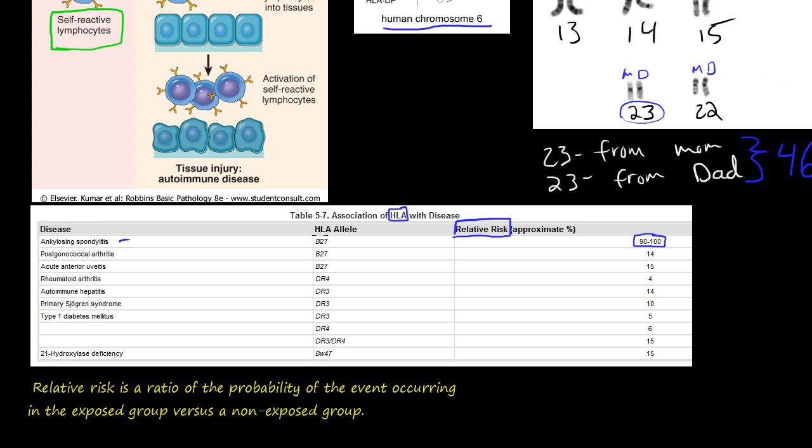If you have the HLA B27, you are 14 times more likely of getting post-gonococcal arthritis than someone that doesn't have this allele. And you can go down the list with rheumatoid arthritis, Sjögren syndrome, type 1 diabetes, 21-hydroxylase deficiency.